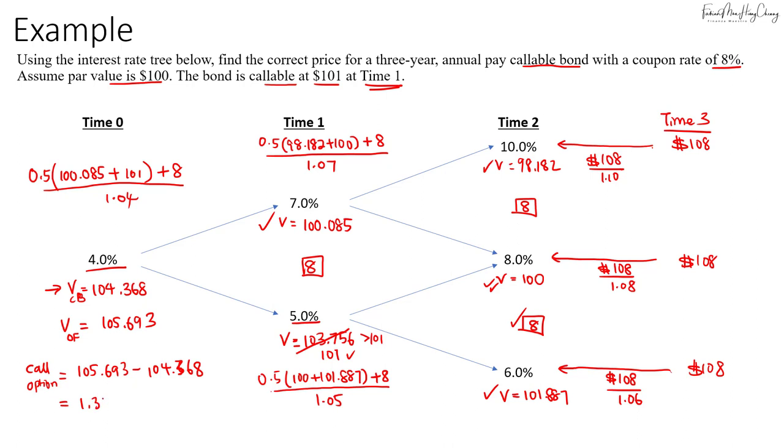So $1.33. This is the value of the call option and this is the value of the callable bond. Just be careful—check what is the call price and what is the period where you can call the bond.